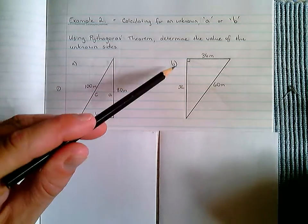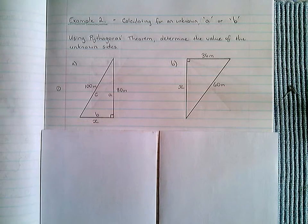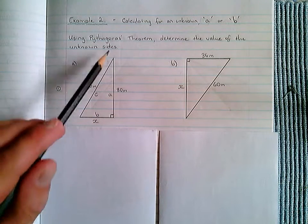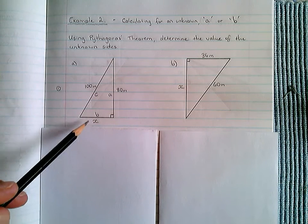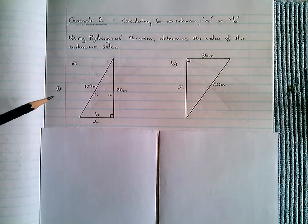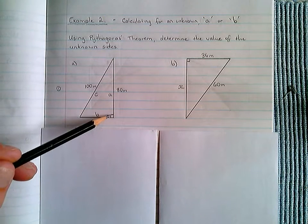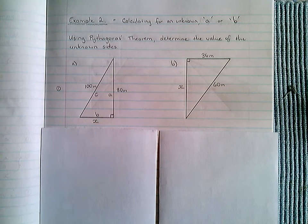We've got two problems that we're going to perform, the first of which is located here. Question A, we have a right-angled triangle with sides 100 metres, 80 metres and an unknown X. And the first step, just like example 1, is we need to determine what these sides actually are with regards to A, B and C, which are the values we need to use in Pythagoras' theorem.